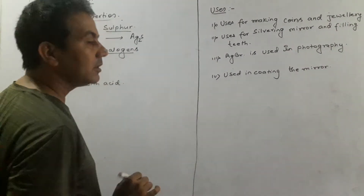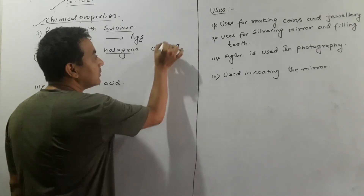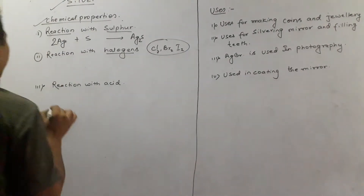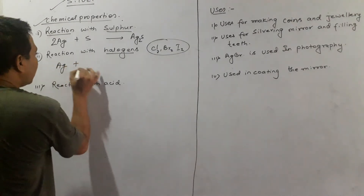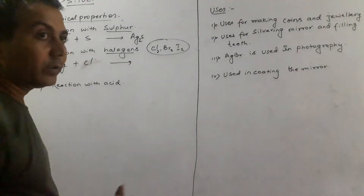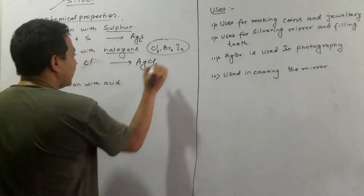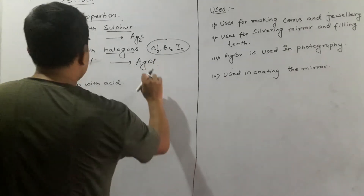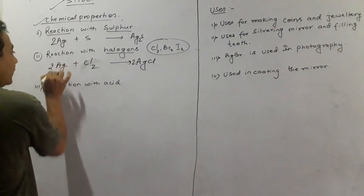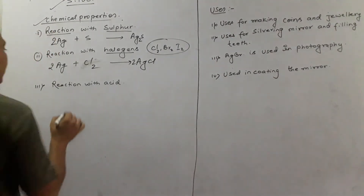Then if silver reacts with halogens — the halogens are chlorine, bromine, and iodine. What happens when silver reacts with halogens? Let us take the example of chlorine. When silver reacts with chlorine, it produces silver chloride — that is a silver salt. The balanced equation gives 2Ag + Cl₂ → 2AgCl, so silver chloride is formed.